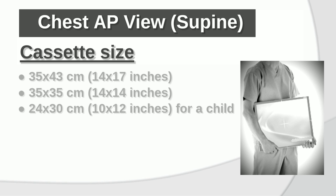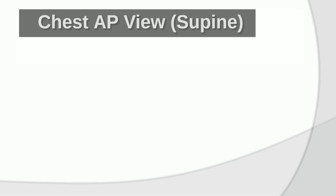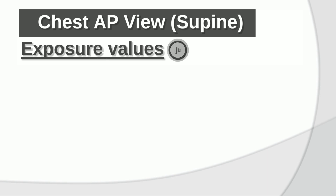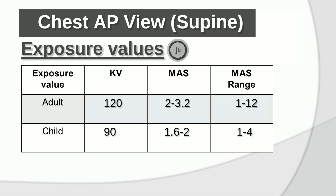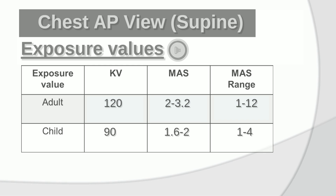Cassette size: 14x17 inches, 14x14 inches, and 10x12 inches for a child. Exposure values for adult: KV 120, mAs 2–3.2, mAs range 1 to 12. For child: KV 90, mAs 1.6 to 2, mAs range 1 to 4.